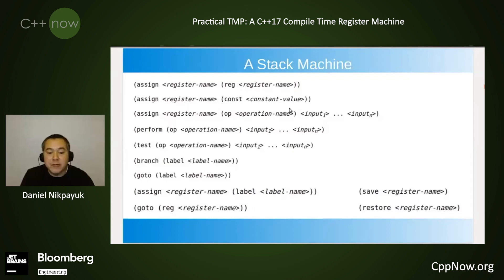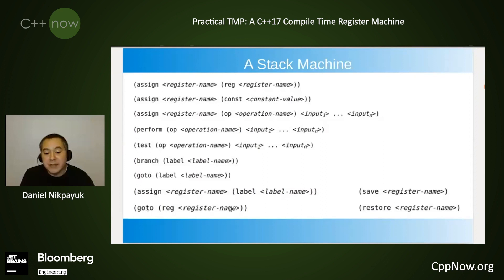Although this language can be modeled from any existing assembly language, I've decided to use a modified form of the language provided in Chapter 5 of the classic text Structure and Interpretation of Computer Programs. You can assign to a register from another register or a constant, or based on an apply operation. Perform is not needed here because it interacts with the OS I/O system, which we don't have access to. There's also test, branch, goto, assign from a label, and then save and restore.